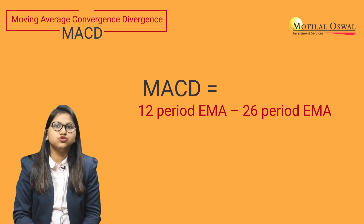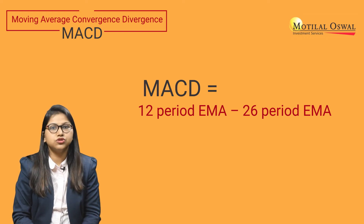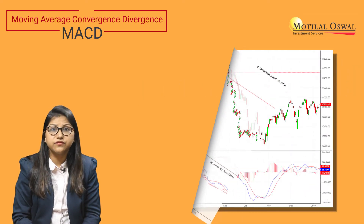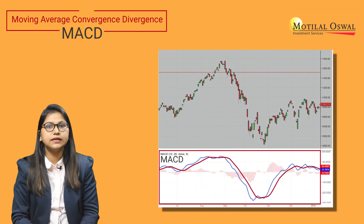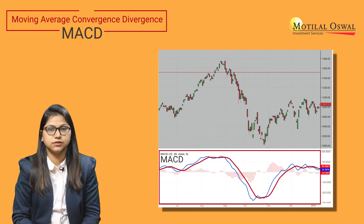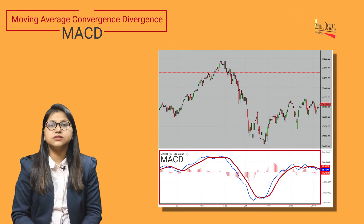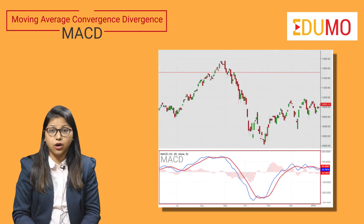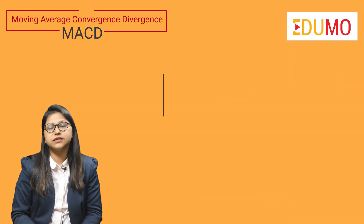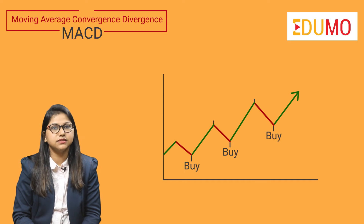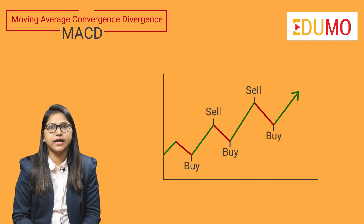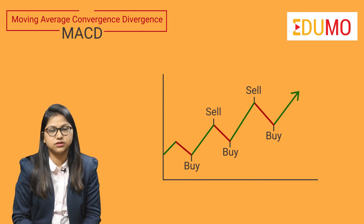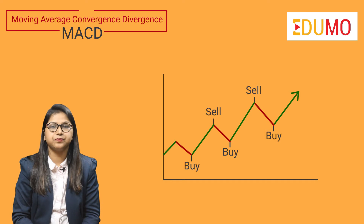MACD is usually used for identifying the ongoing trend as well as the reversals. Now let us discuss how this indicator gives us buy and sell signals. We will also refer to the charts while understanding each of the concepts better.